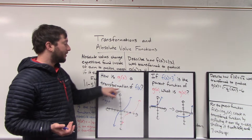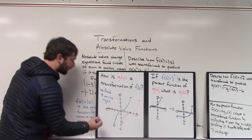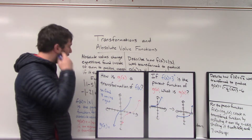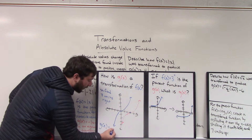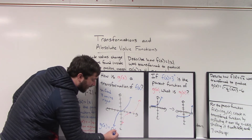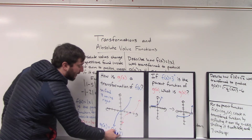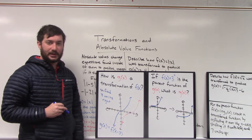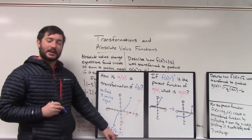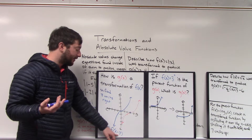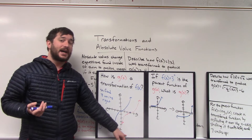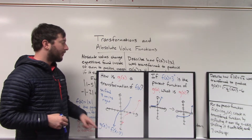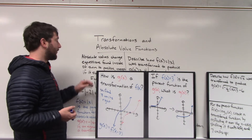How can we describe g of x as a transformation of f of x? Well, g of x would be the same thing as if we took f of x and subtracted three next to x — know your a's, b's, h's, and k's. Changing h would move the graph three units to the right. Remember: if you subtract next to x, you move to the right; if you add next to x, you move to the left; if you add or subtract off to the side, that's when you're moving up or down.